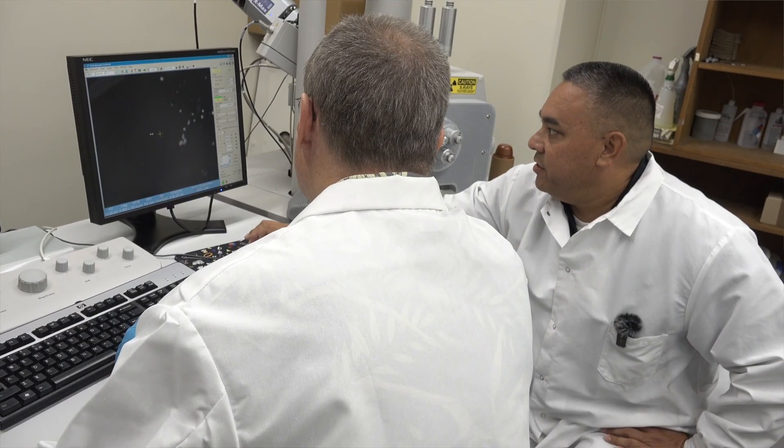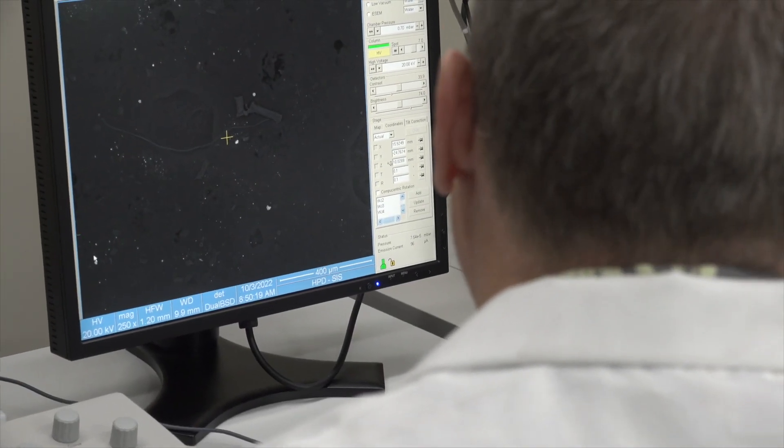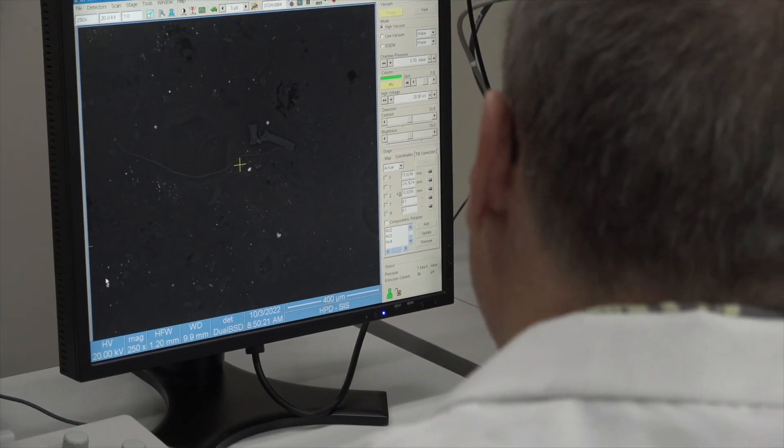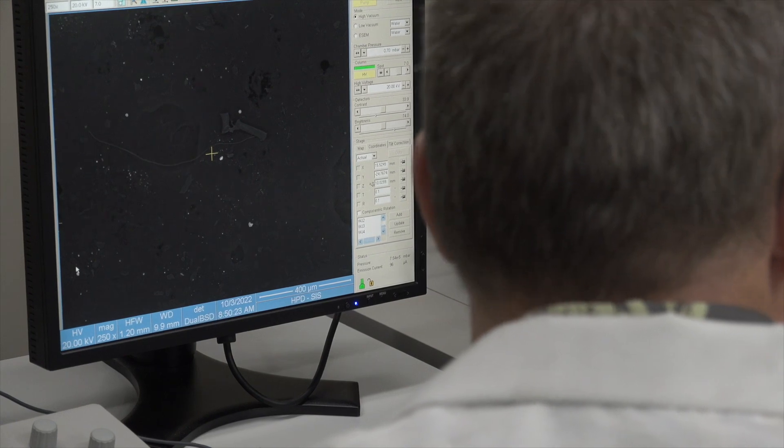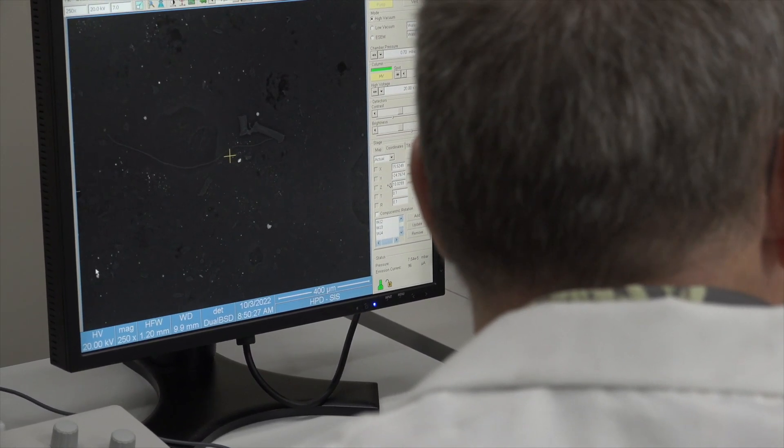What we're looking at is the surface of our sample. It's like stars in the sky. That's what it looks like. Actually, the brighter the particle, the more metallic it is. So it's telling us right now that we're seeing some particles that are metallic that could be gunshot residue.